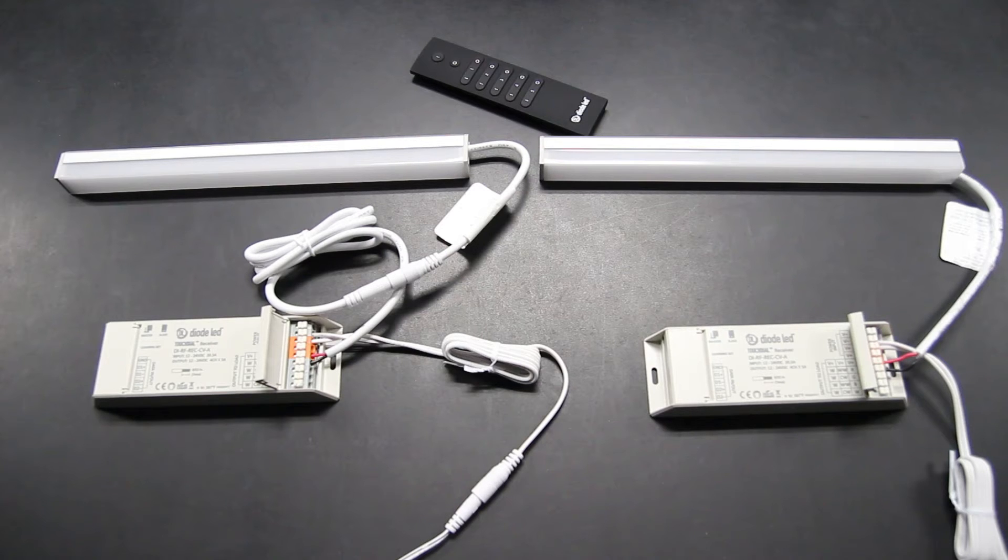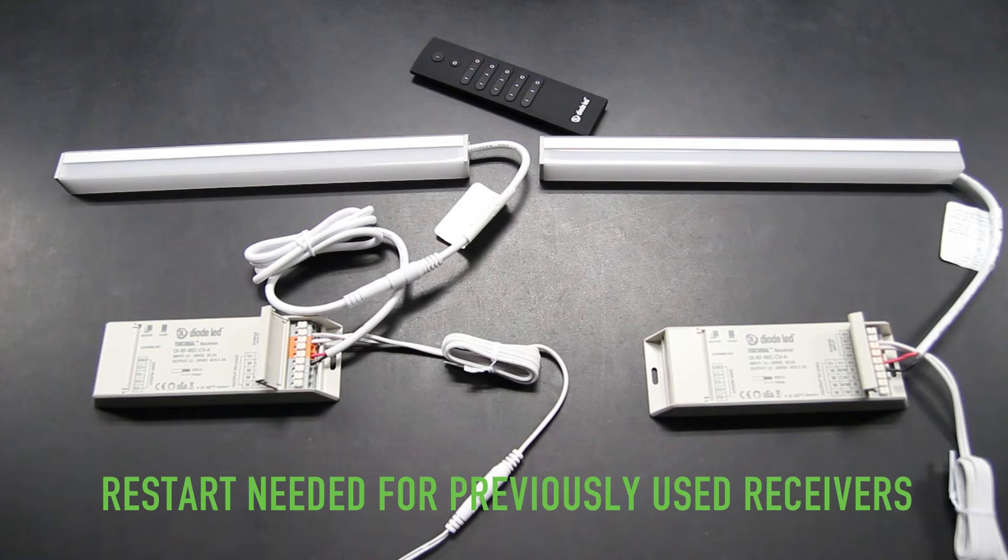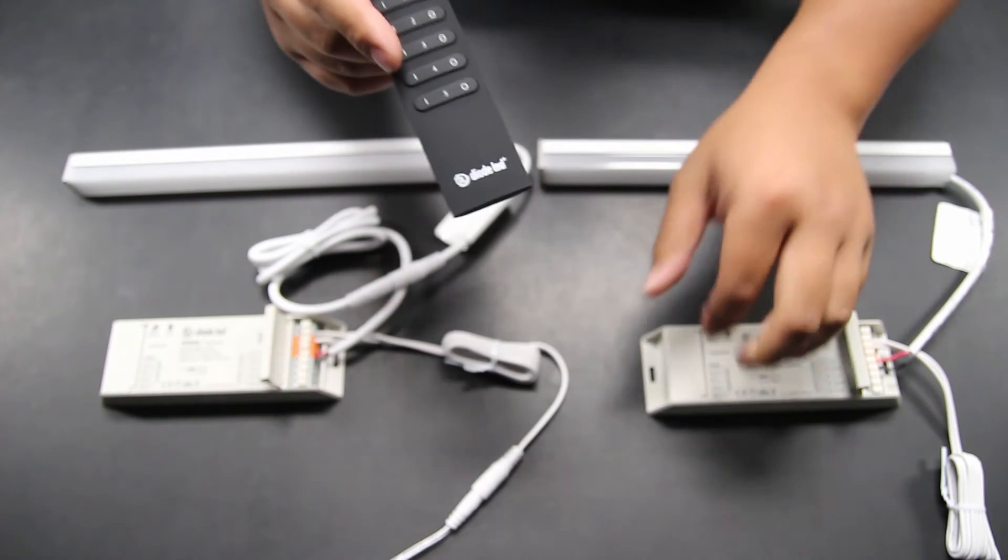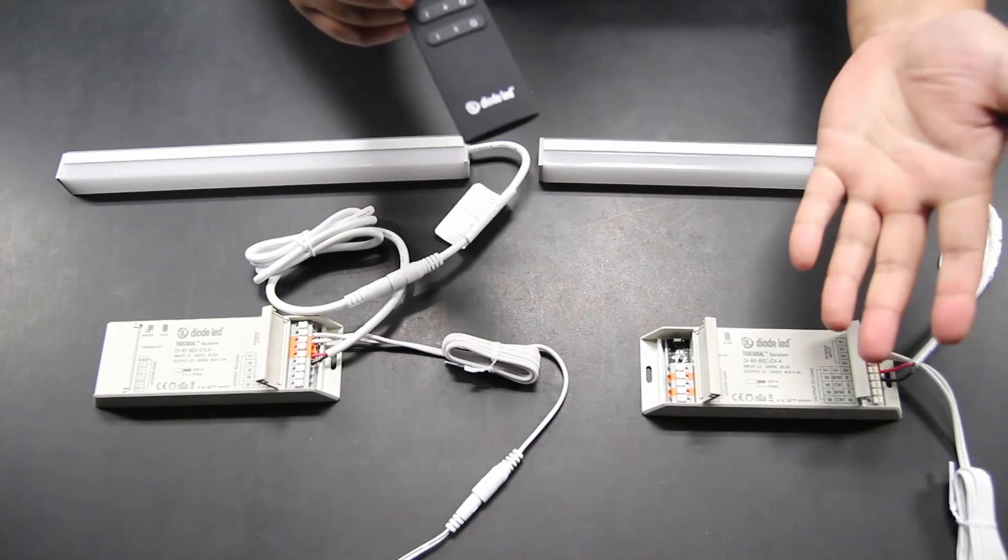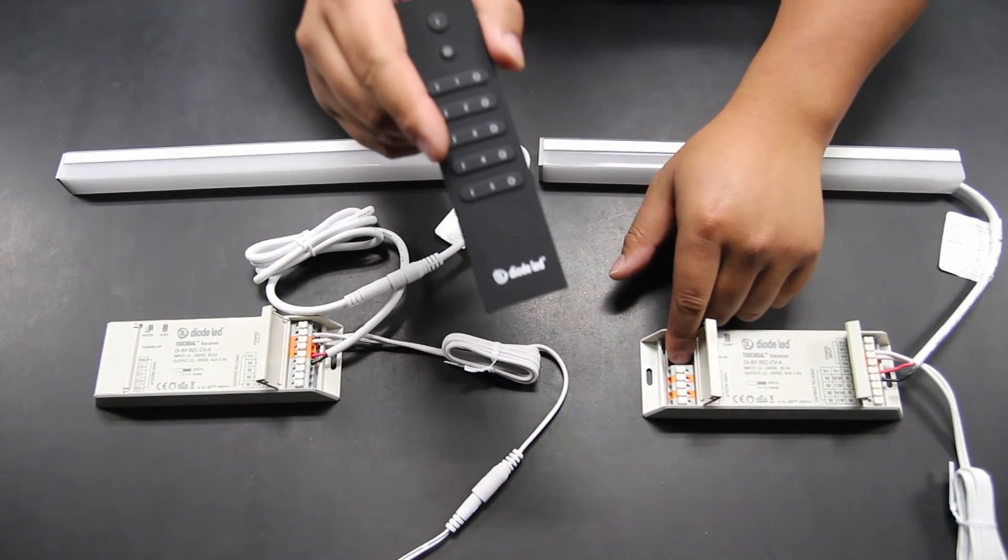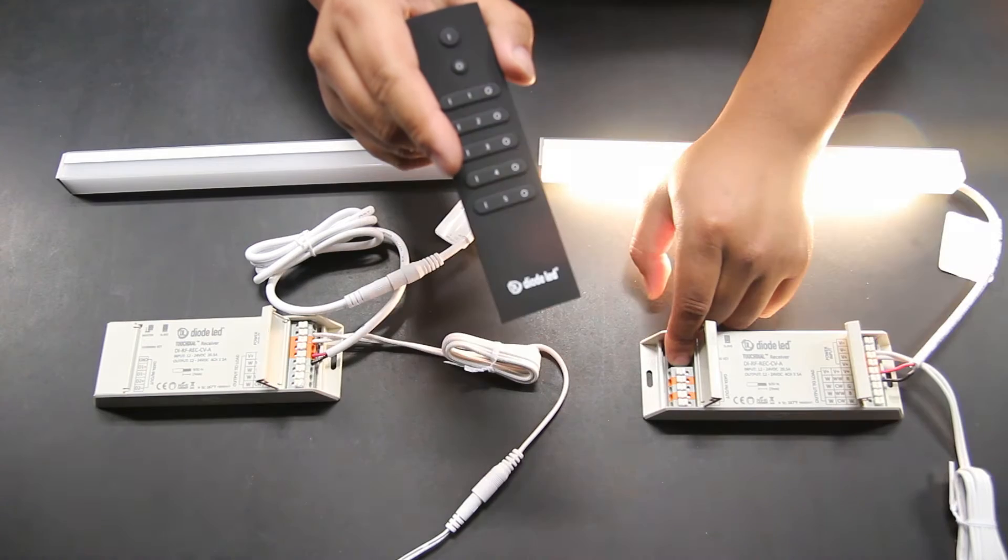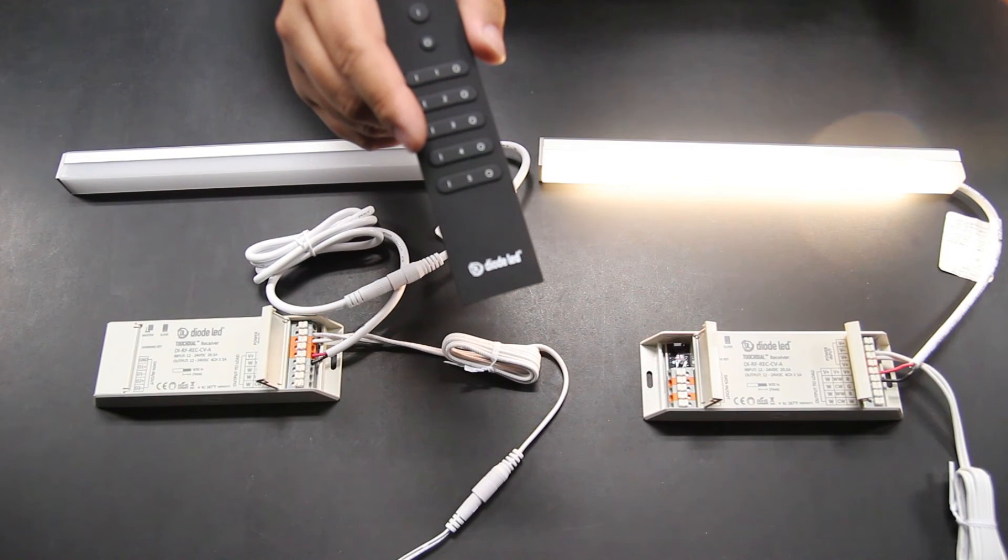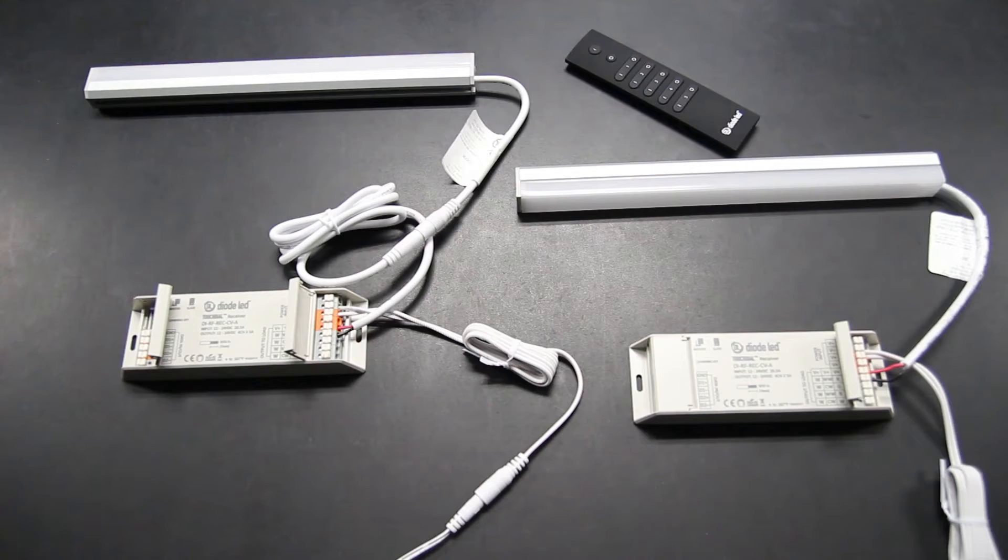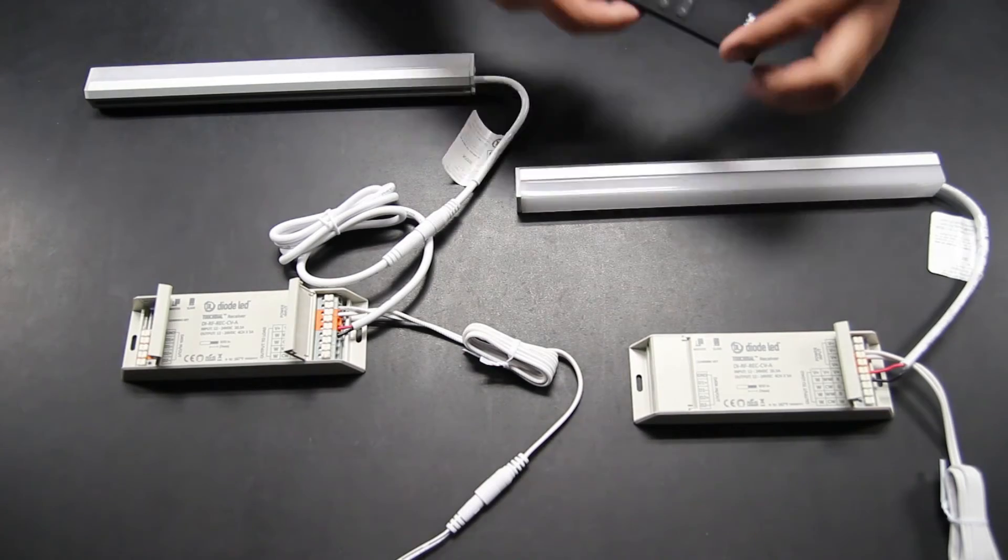The lights may or may not be lit. If you're using used TouchDial receivers like in our demo, you will need to reset them. To perform this, press and hold the learning key found on the left side of the receiver. The lights attached will flash. If you're using new TouchDial receivers, this process is not required.